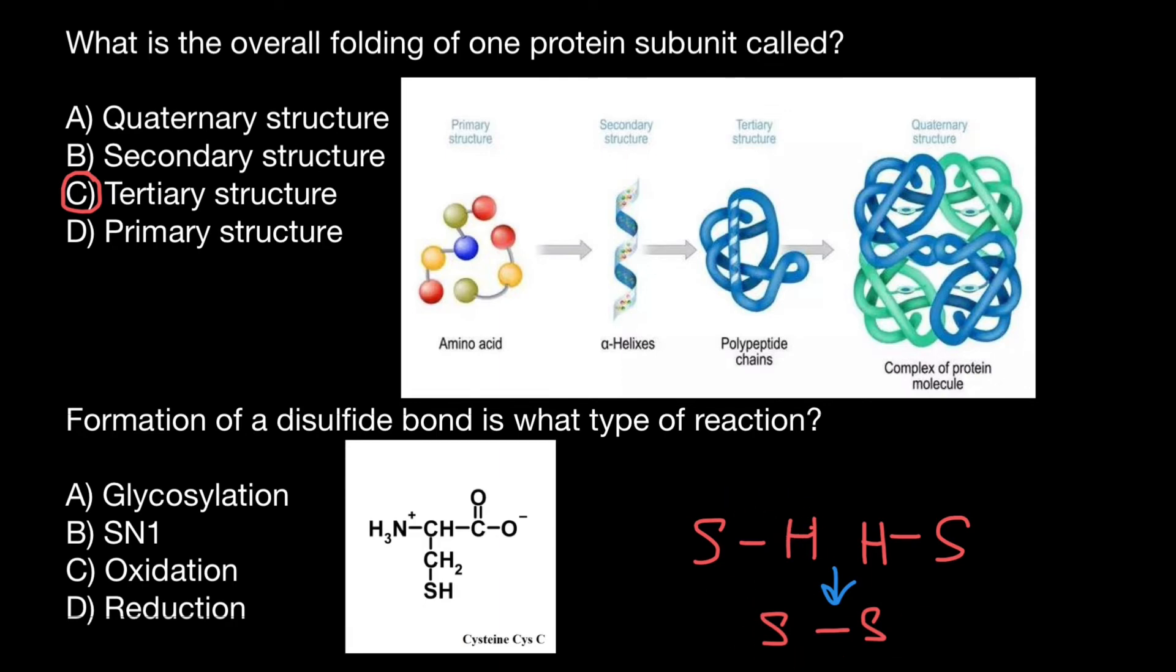These R groups here are shown in the reduced form. What we see here in the disulfide bond is the result of oxidation of these R groups. So oxidation reactions form disulfide bonds.